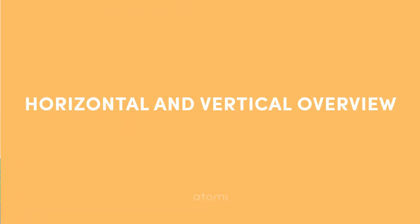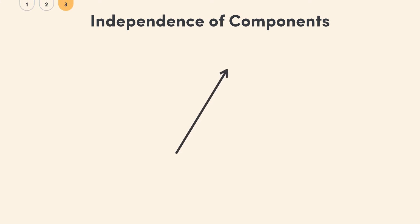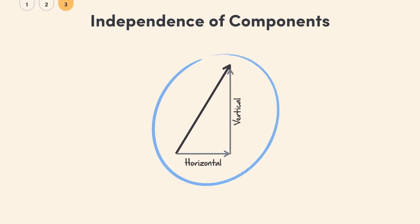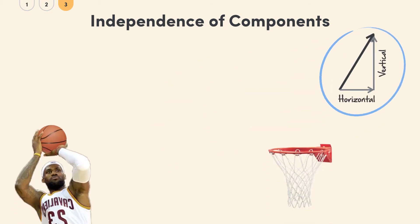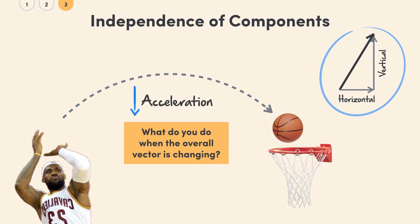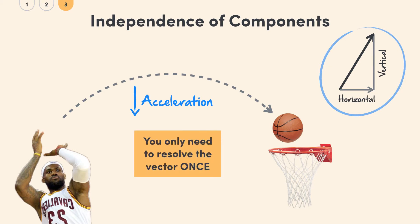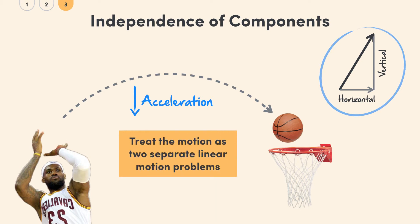We know that we can treat any vector as two separate parts — in this case, horizontal and vertical. You might be thinking: how does that help when the overall vector is changing, when there's acceleration in the vertical direction, or when the object goes slightly up then down? Do you need to split the vector at every single point? Well, physics is on your side — you only need to resolve the vector once. Each of the components then develops independently of one another through time, so you can treat it as two separate linear motion problems: one for vertical, one for horizontal, then bring it all together at the end.